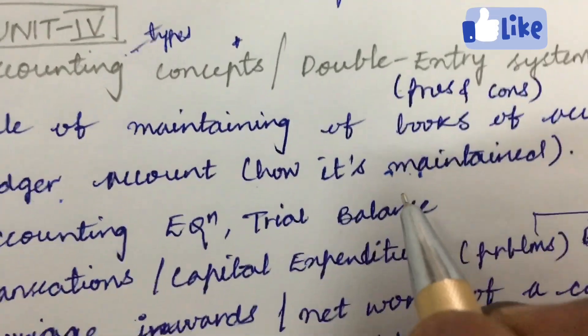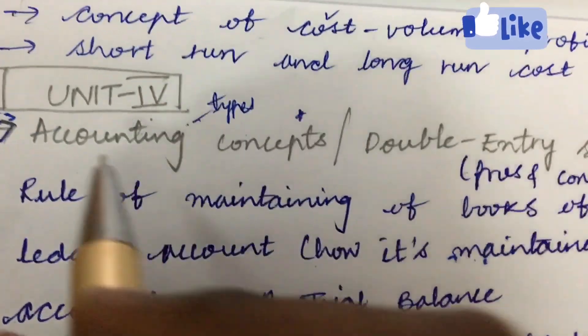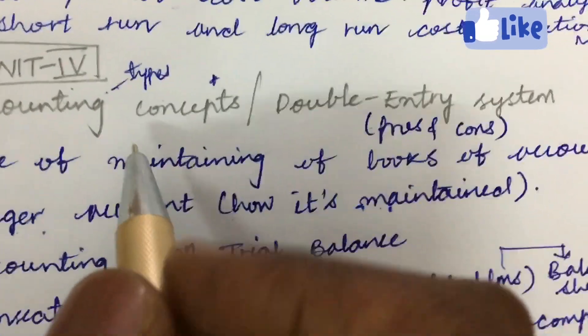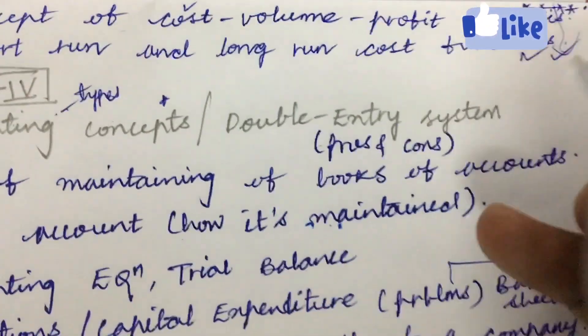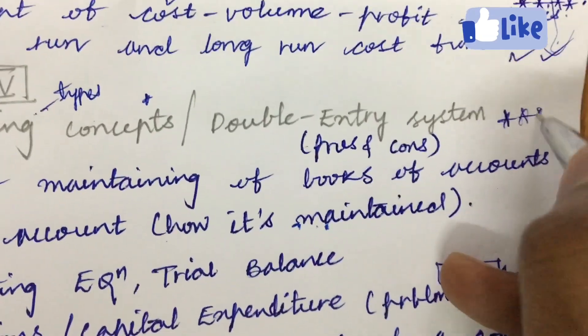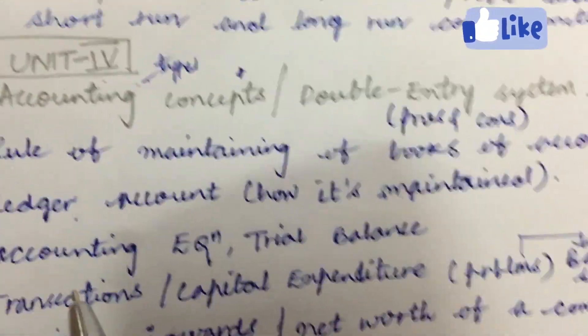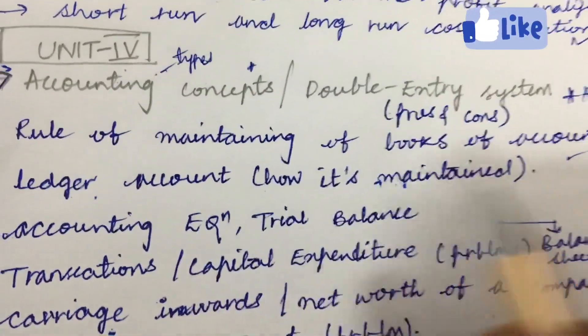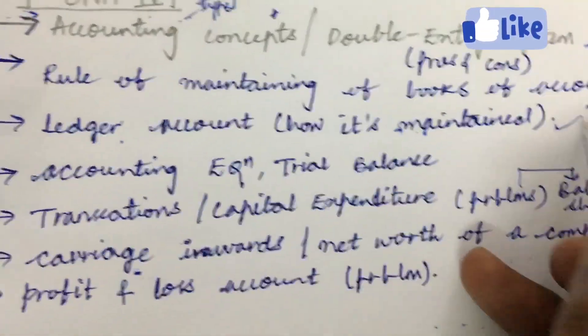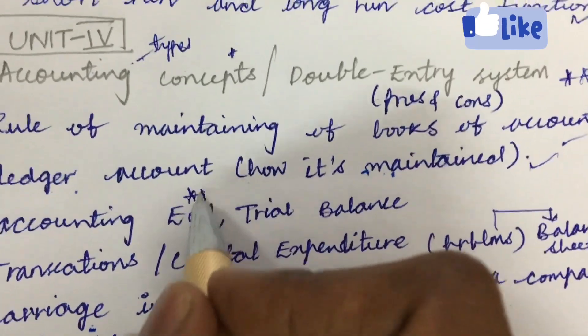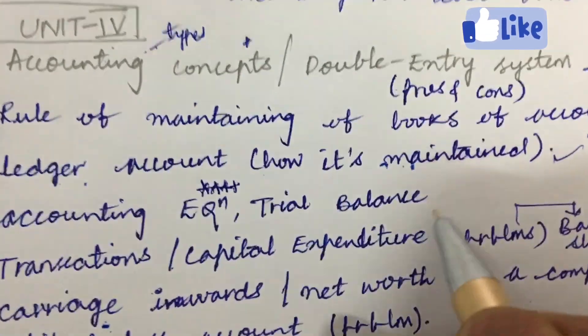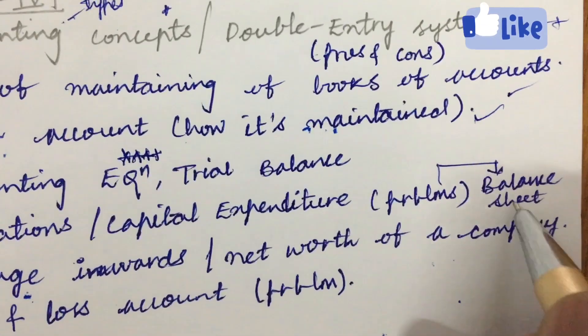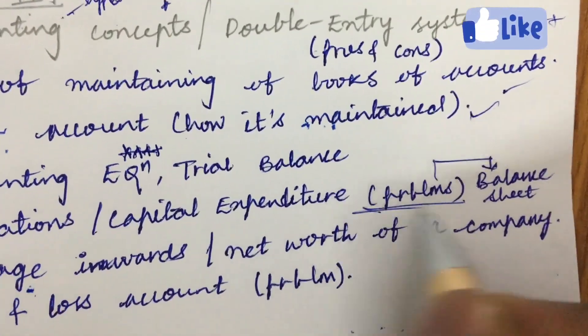Dear students, if you are perfect with problems, then only go with Unit 4. Or you can work out Units 1, 2, and 3, which are all about theory. Accounting and its types as well as concepts and problems, double-entry system pros and cons—one of the 7-mark questions if a problem is asked for 8 marks, or this may be 5 marks. Later, the rules of maintaining books of accounts, ledger account and how it is maintained, and accounting equation—very important, a sure-shot question—and the trial balance.